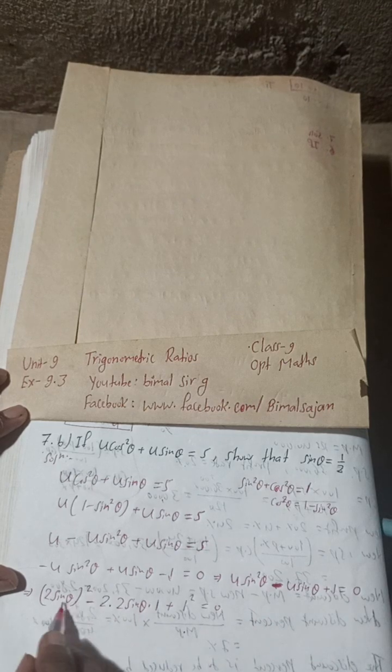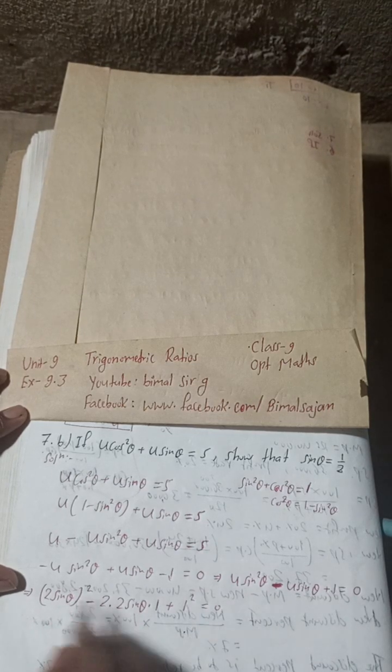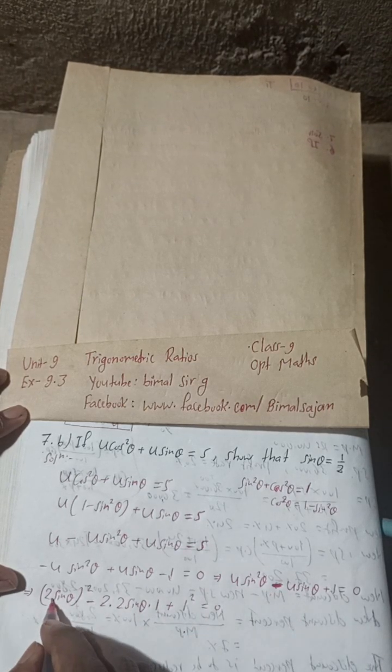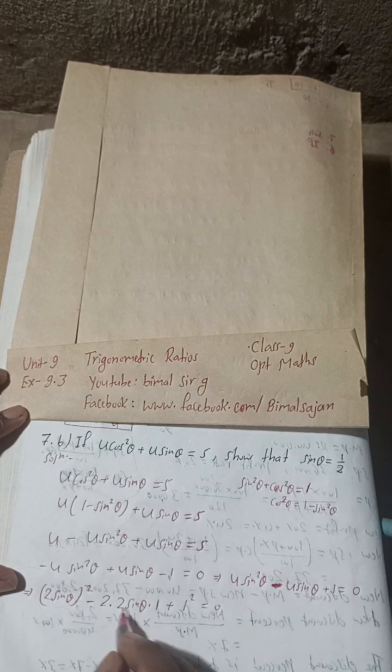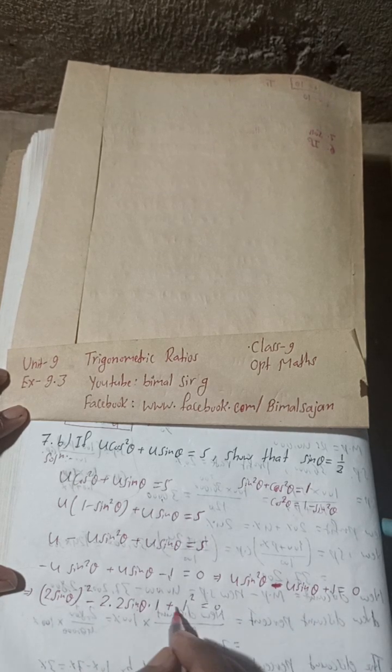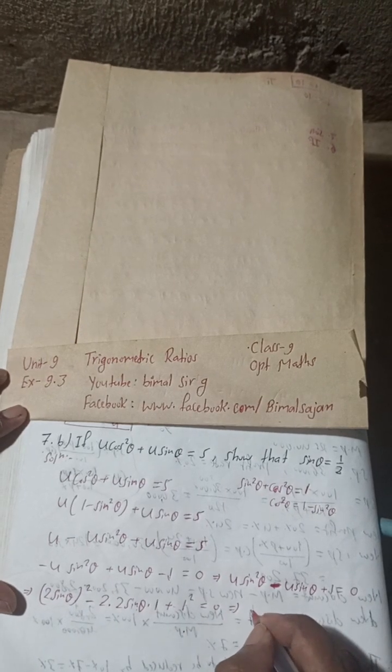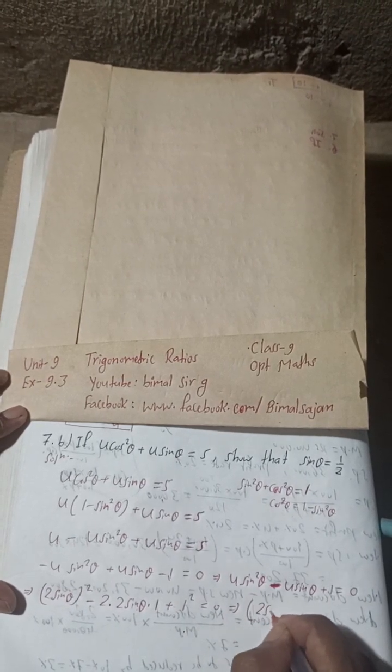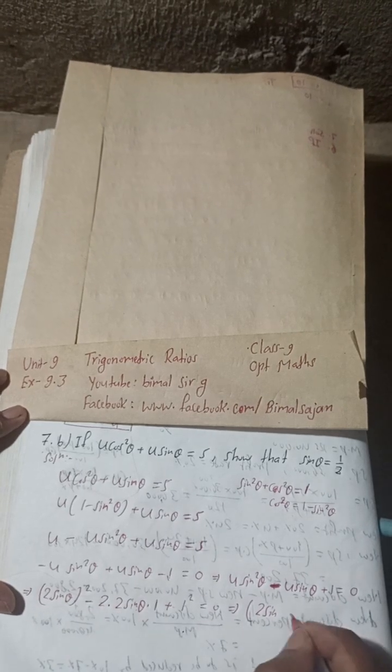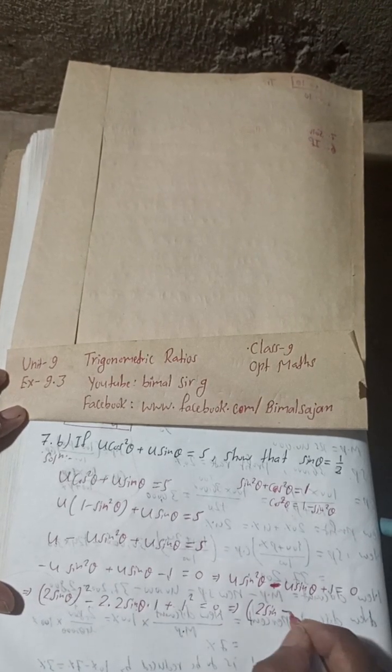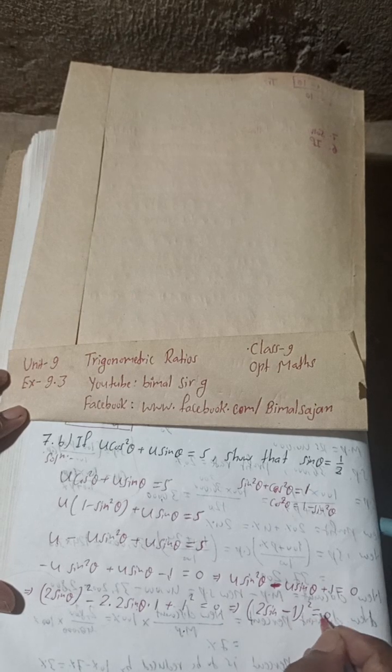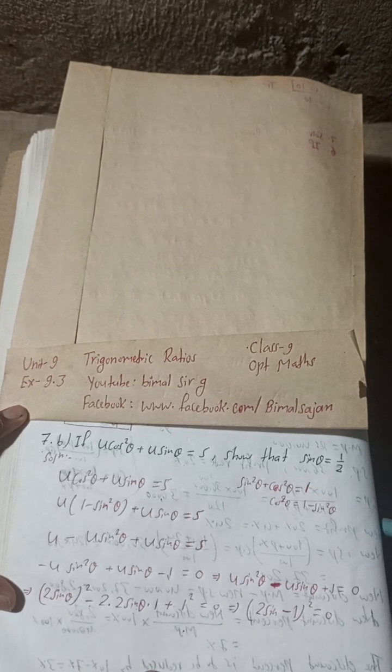This plus one we can write as 1², that means b² = 0. If you split this, if you break this, you will get back the same: (2sinθ)² = 4sin²θ, minus 2×2sinθ×1 = 4sinθ, plus 1². This can be written as (2sinθ - 1)² = 0.